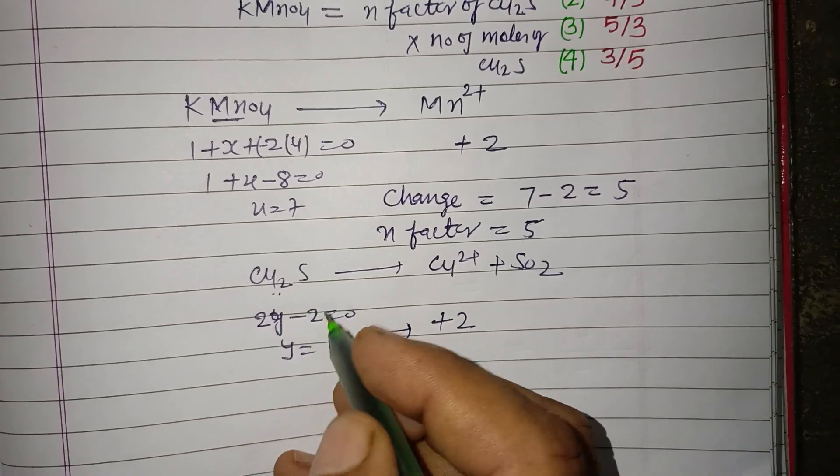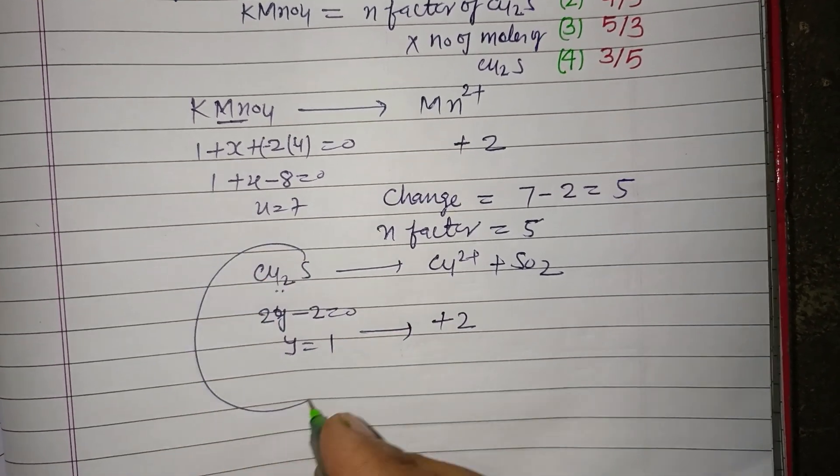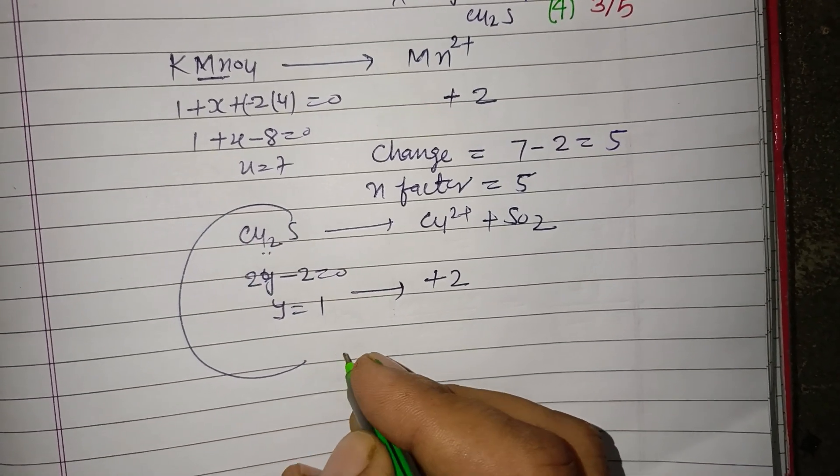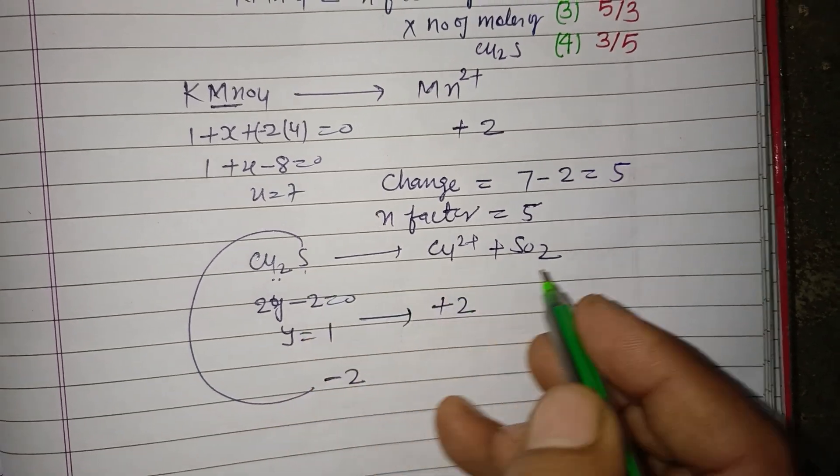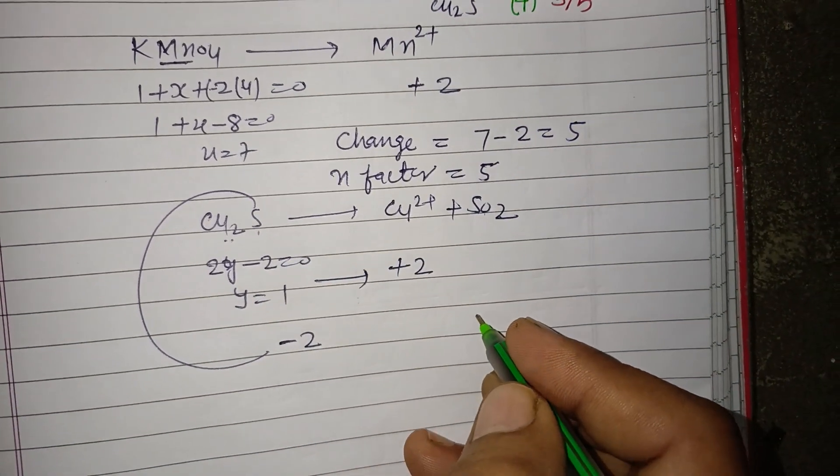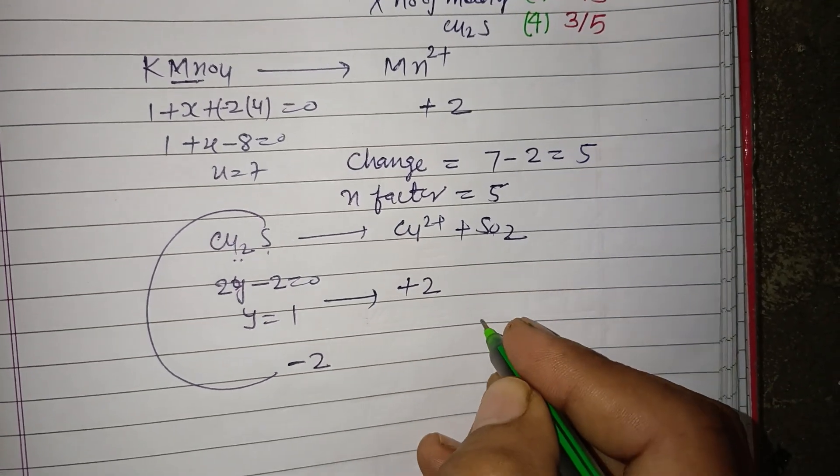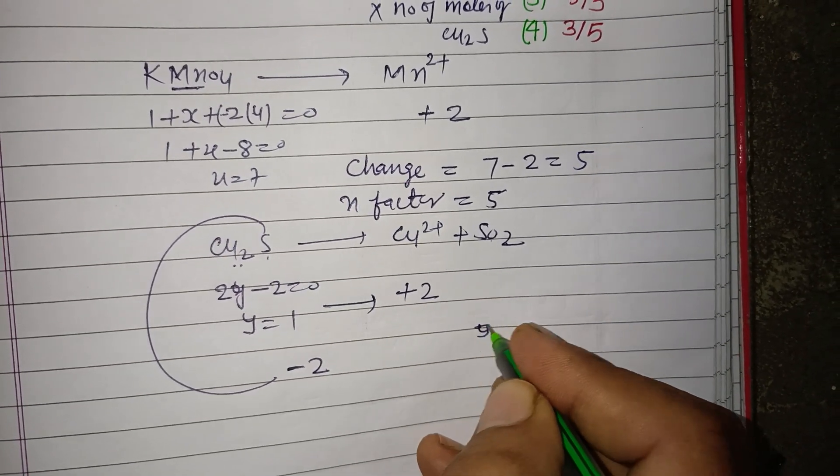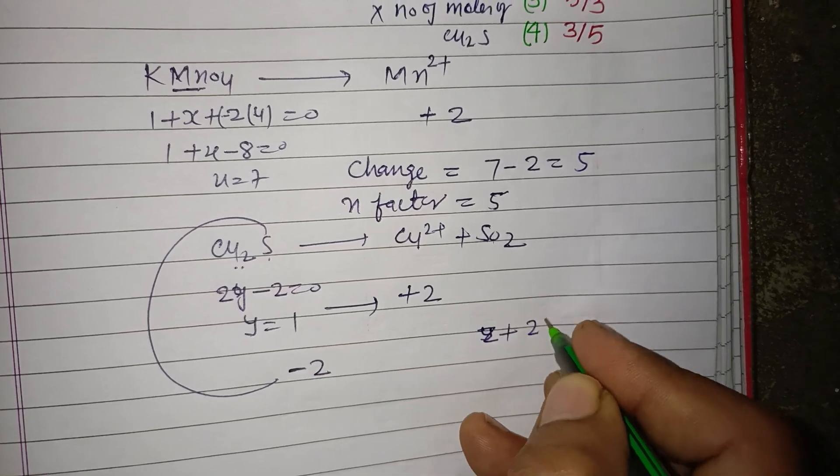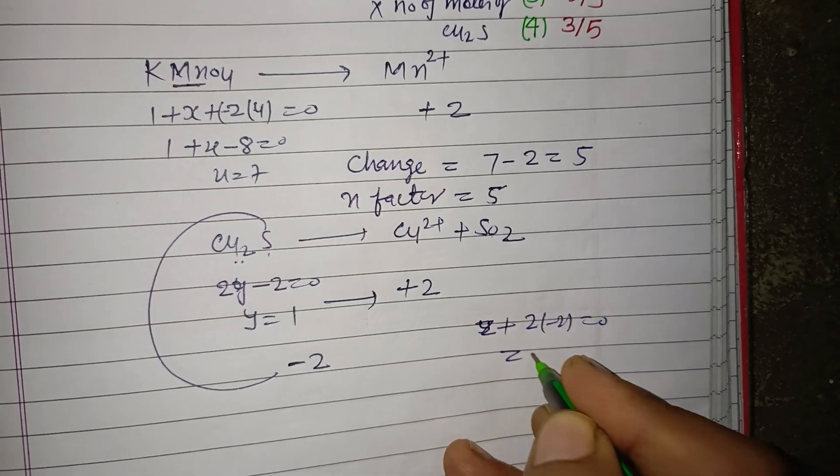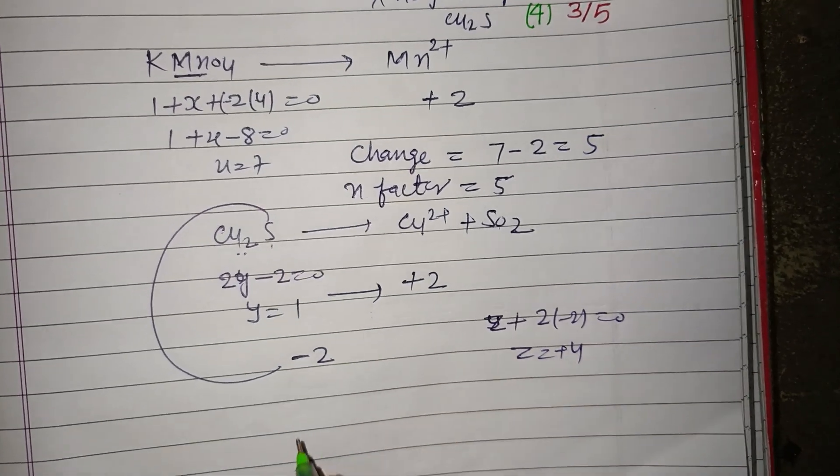For sulfur, in Cu2S sulfur is -2. We take z + 2(-2) = 0 for SO2, so z = 4.